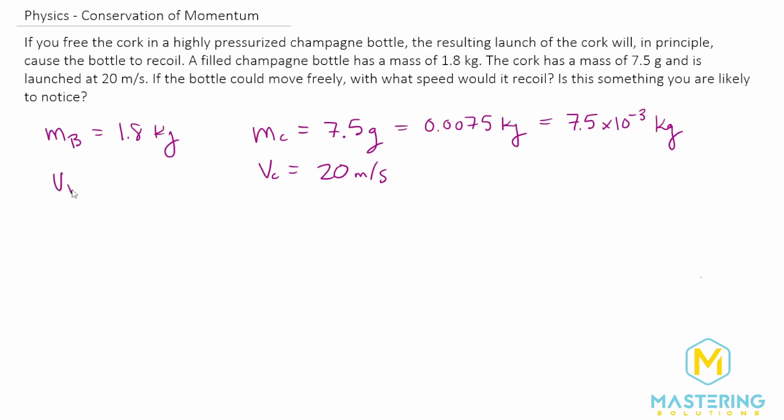So what we're looking for is the final velocity of the bottle as it recoils. And as we've discussed before, we'll be using conservation of momentum. The momentum of the system we're defining as the momentum of the bottle plus the momentum of the cork is equal to 0.